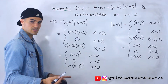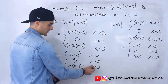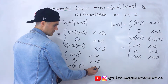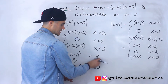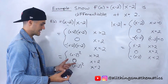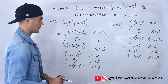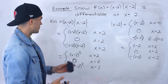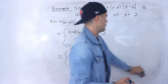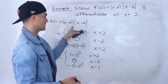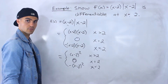We didn't necessarily have to split up the 0 case — we could have made one piece x less than or equal to 2, or x greater than or equal to 2, because both give the same y value of 0. But I split it up anyway. Basically this function we were given is equal to this piecewise function right here — they're both the same thing.